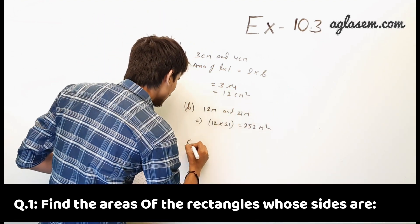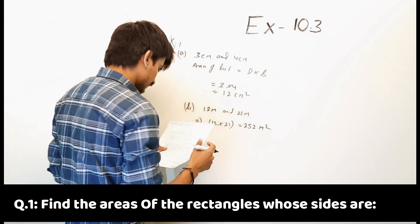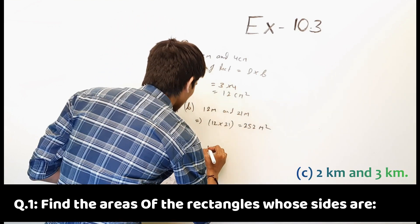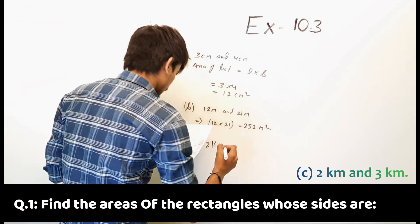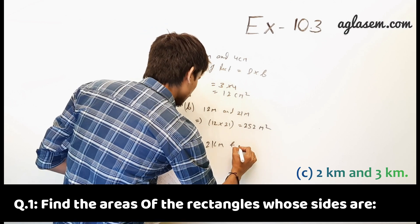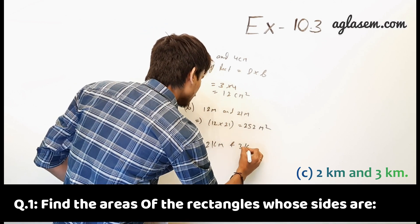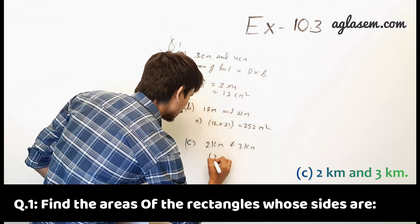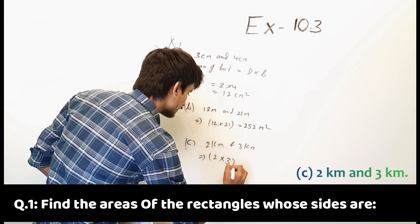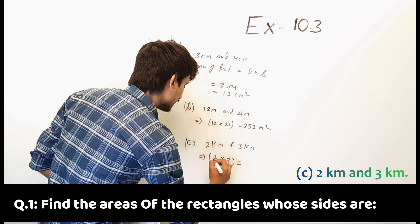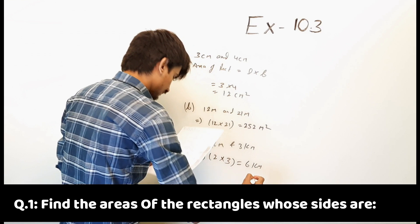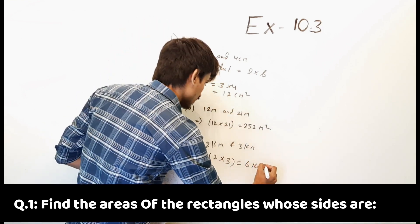Part C: sides are 2 kilometer and 3 kilometer. So the area is equal to 326 kilometer square.